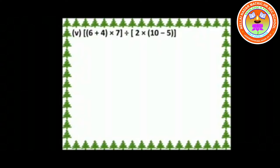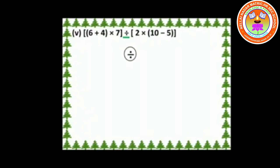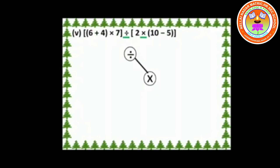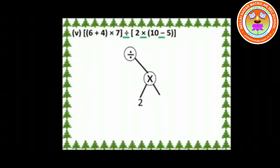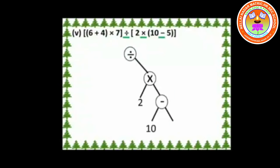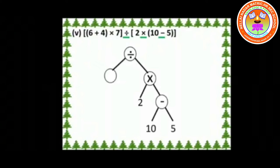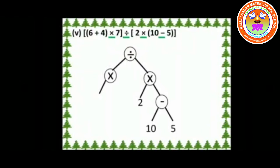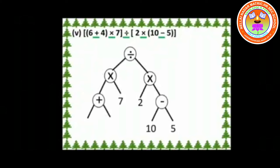Fifth one: (6 + 4) × 7 ÷ 2 × (10 − 5). Look at the question — the symbol ÷ is the node. On the right side, the symbol × is the node and its leaves are 10 and 5. On the left side, the symbol × is the node and its leaf is 7. From that symbol ×, the symbol + is the branch, and its leaves are 6 and 4.